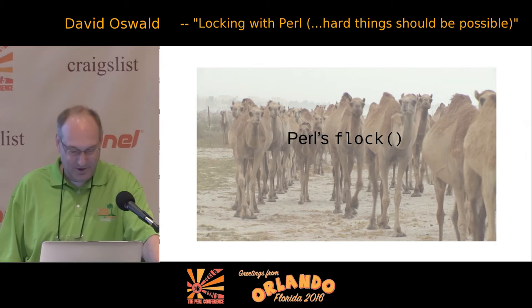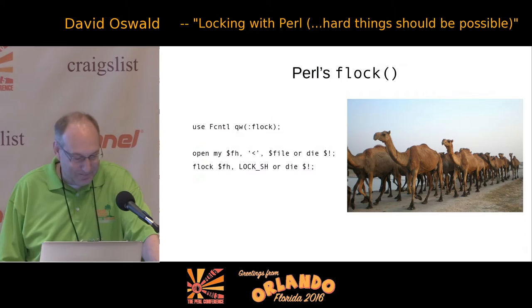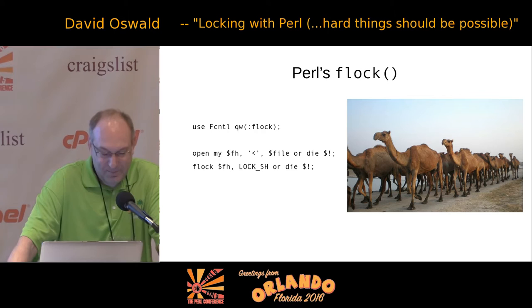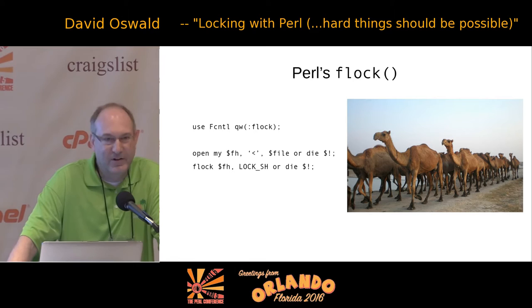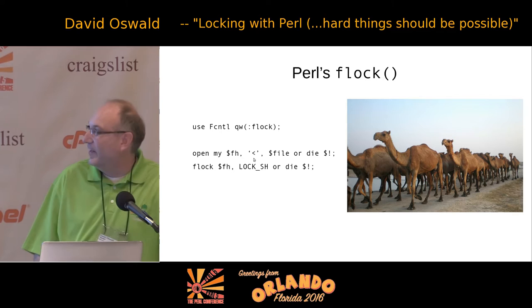Let's talk about Perl's flock — that's a flock of camels, in case you can't tell in the back row. Here is a very simple example of using flock on an input file. At the beginning we use Fcntl and import some constants we're going to use. Then we go ahead and open a file in input mode, and then we lock the file — we get a shared lock on it. That's a very simple example of using flock, or using Perl's locking.